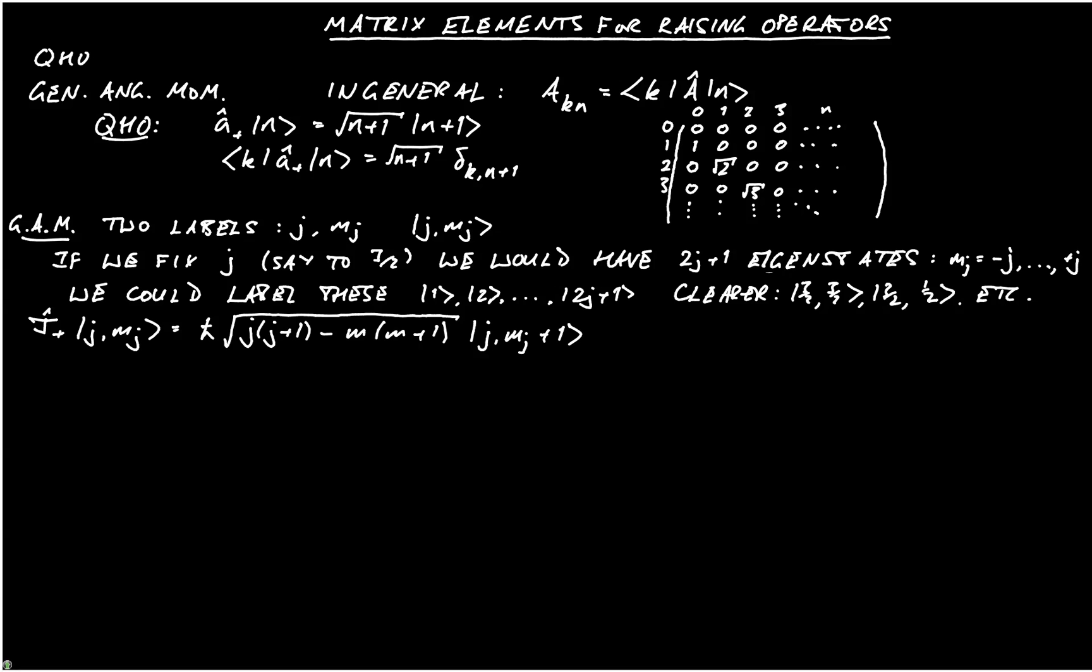And therefore, the matrix element between two different states, so bra j mj prime, j+ with ket j comma mj, is equal to that same factor, h-bar, and I'll put the square brackets to indicate that the factor is in there, but I won't write it out again.